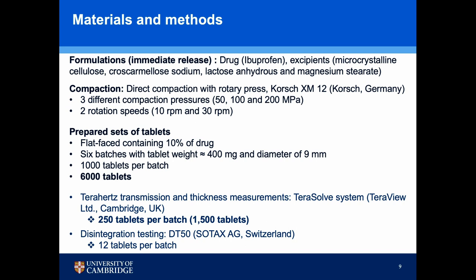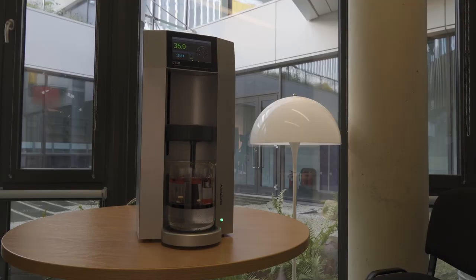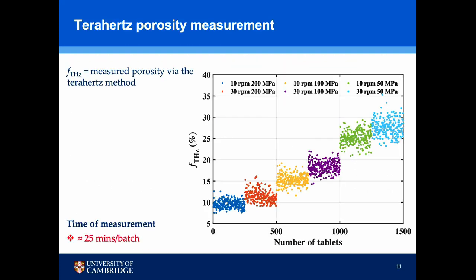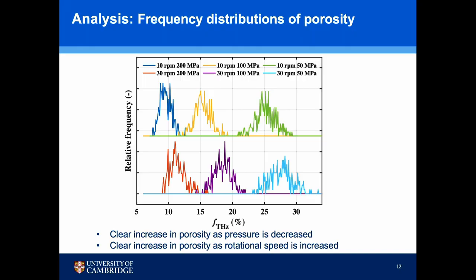Out of the 1,000 tablets per batch, we have currently been able to measure 250 tablets, giving us 1,005 tablets in total measured. These are the data I'm going to talk about. As you can see from the measured porosity across all 1,005 tablets, by visual observation we can clearly see that the porosity changes based on the compaction parameters. Here, we are using about 25 minutes to measure one batch of 250 tablets. This is a frequency distribution of the measured porosity, and you can also clearly see the differences and how uniformly they are distributed.